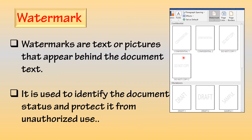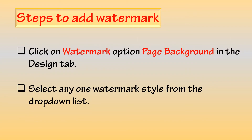Watermark: Watermarks are text or pictures that appear behind the document text. They are used to identify the document status and protect it from unauthorized use. Steps to Add a Watermark: Click on the Watermark option in Page Background in the Design tab, and select any one Watermark style from the drop-down list.